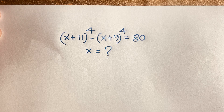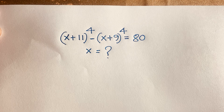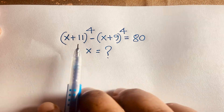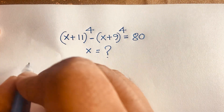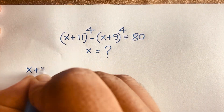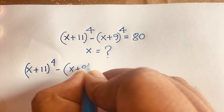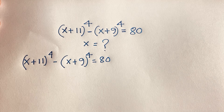Hello everyone. In this video we solve a wonderful equation. The question is: (x + 11)⁴ − (x + 9)⁴ = 80. What is x? How to solve this interesting math olympiad question? So here we have x + 11 and x + 9.